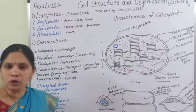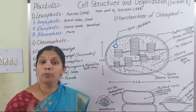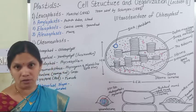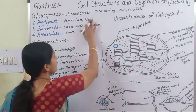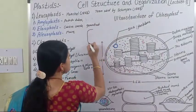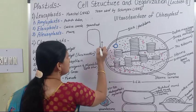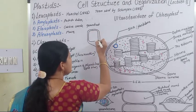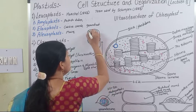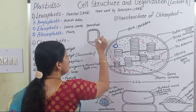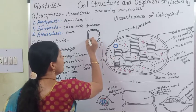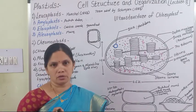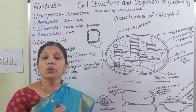Aleuroplasts store proteins. Leucoplasts which store protein are known as Aleuroplasts. For example, if you observe the endosperm of maize seeds, the Leucoplasts present there show storage of protein. This is all about the Leucoplasts.